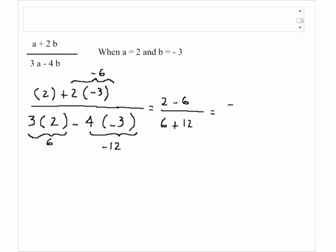So the top of the fraction I get minus 4, and the bottom of the fraction I would get 18. After I reduce this, divide top and bottom of the fraction by 2, I get negative 2 over 9.